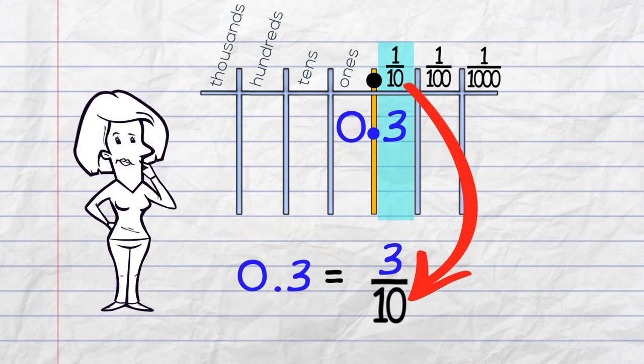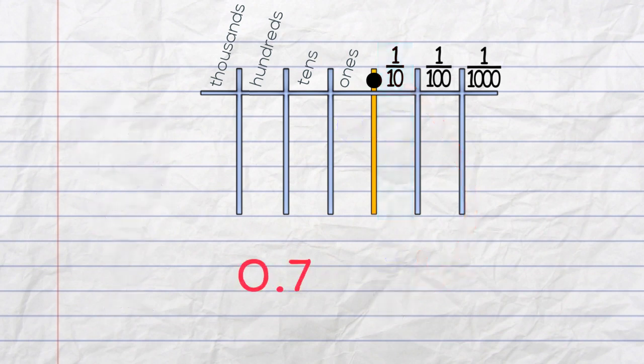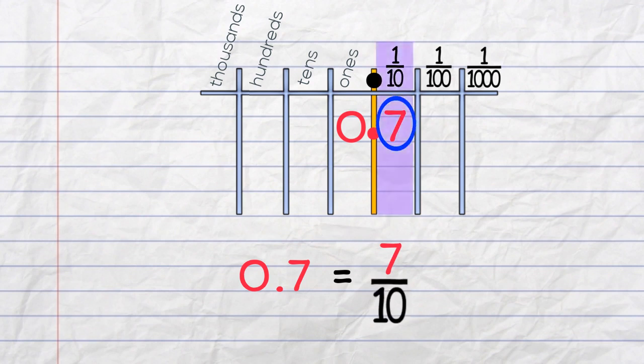Let's do some examples. The numerator is 7. There's only one figure after the decimal point. It's in the tenths column. 0.7 is 7 tenths.